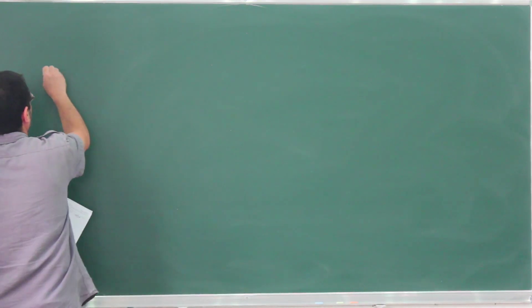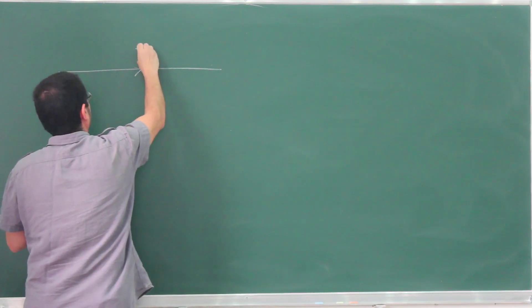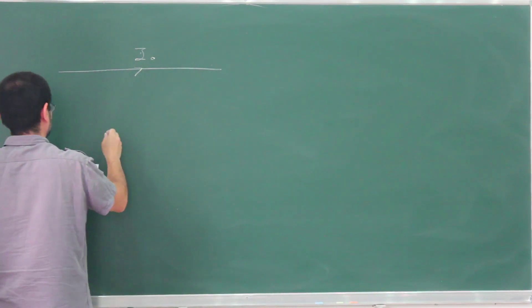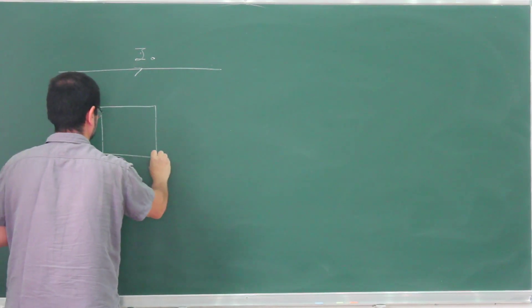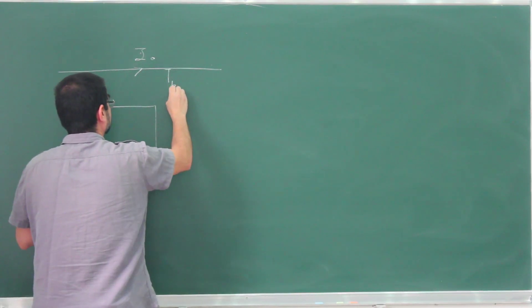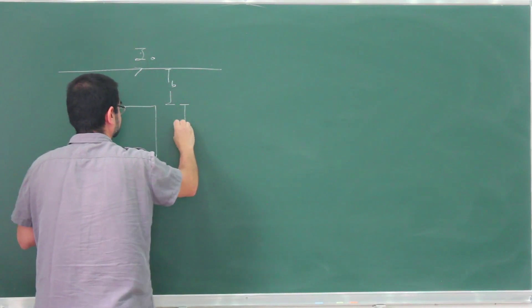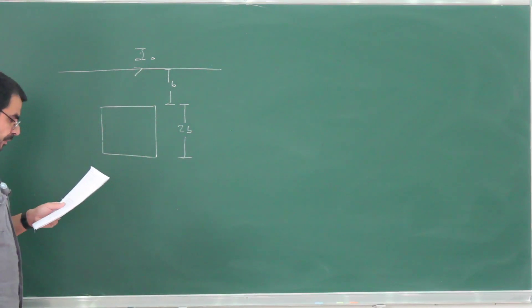So here we have a wire that carries some current I₀, and below this is a square loop which has a distance b from the wire and one of its sides is 2b. This is not to scale, this should be a little bit smaller, but I hope that's okay.